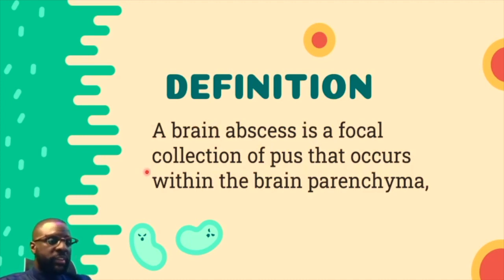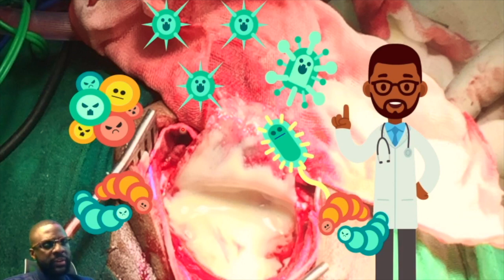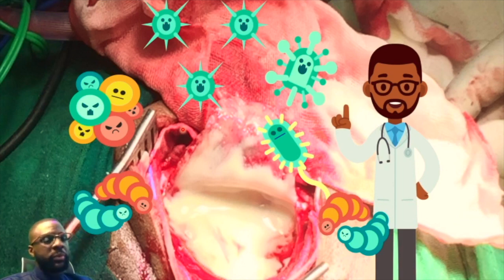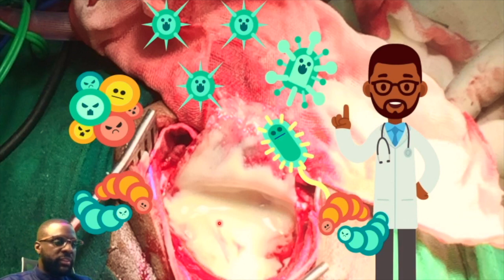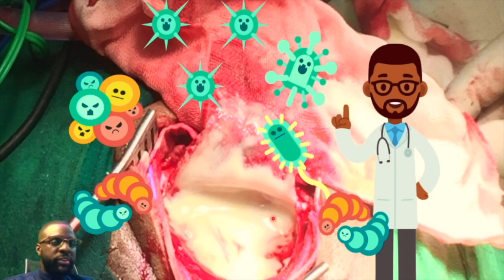The standard definition of a brain abscess is a focal collection of pus occurring within the brain parenchyma. To visualize this: a 12-year-old presented with recurrent otitis media, headaches, and neurological deficit, and a craniotomy was performed. As soon as the dura was lifted, a collection of pus — dead white cells and debris — was visible. This focal intracranial suppuration had spread from a brain abscess to a subdural empyema, though it remains the natural history of the same disease.